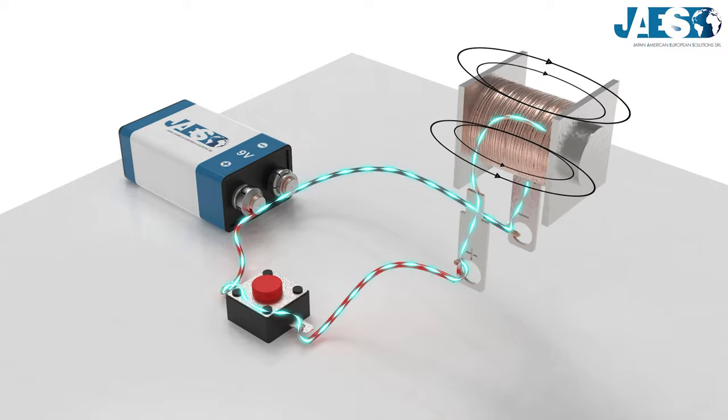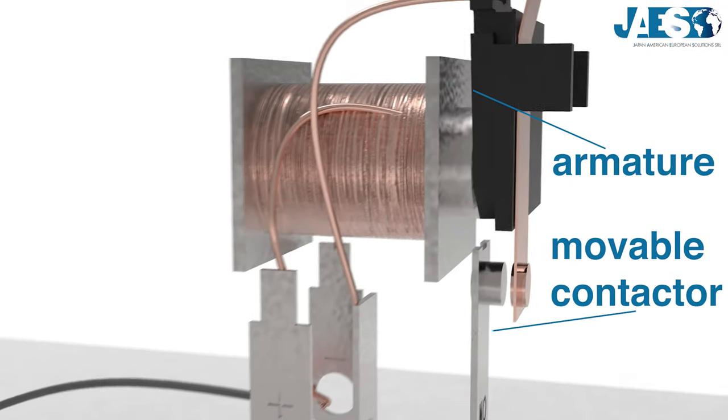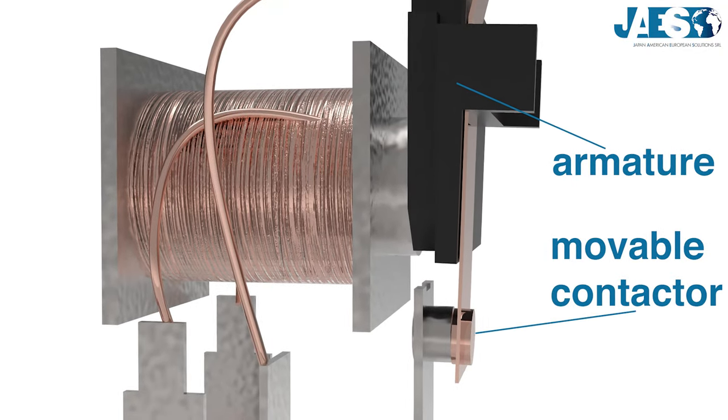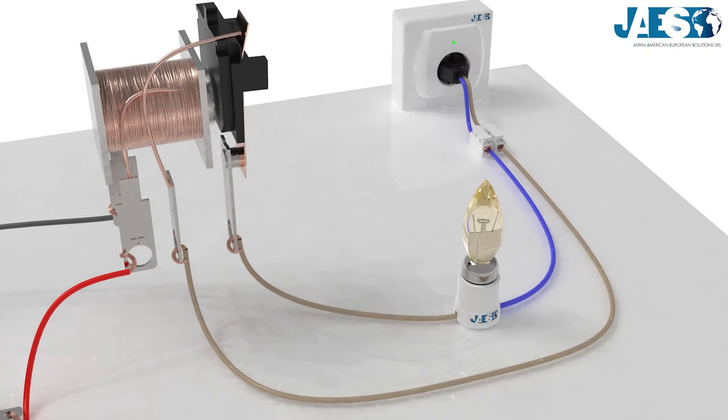When the electric current passes through the electromagnet, it forms a magnetic field that attracts the armature to which the movable contactor is connected. The latter will change position, closing the controlled circuit.